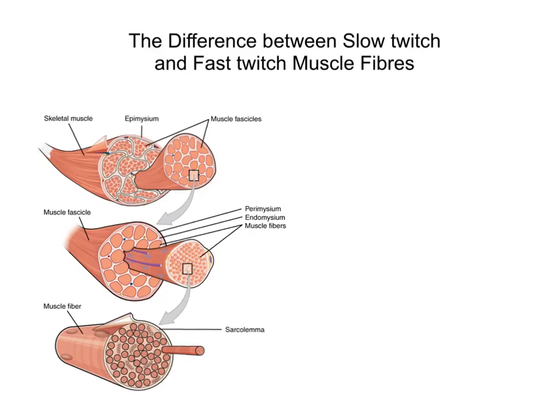We'll look at the difference between what we mean by slow twitch and fast twitch fibres. This is the diagram I used in those previous videos. The muscle fibre is essentially the myofibril. Starting with a full skeletal muscle diagram, we can see that we had muscle fascicles surrounded by the perimysium. Zooming in, we've got the perimysium around the outside and these muscle fascicles with an outer layer of endomysium, this sort of connective tissue.